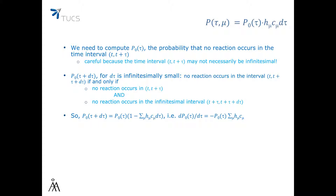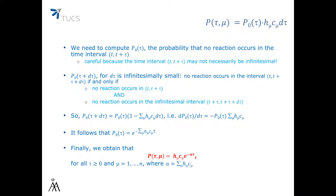We take P0 of tau to the left-hand side and divide by d-tau. We get on the left-hand side the differential of P0 of tau, and on the right-hand side minus P0 of tau times the sum of H times C. This differential equation can be solved, and the solution is P0 of tau equals e to the power minus alpha times tau, where alpha is a constant.